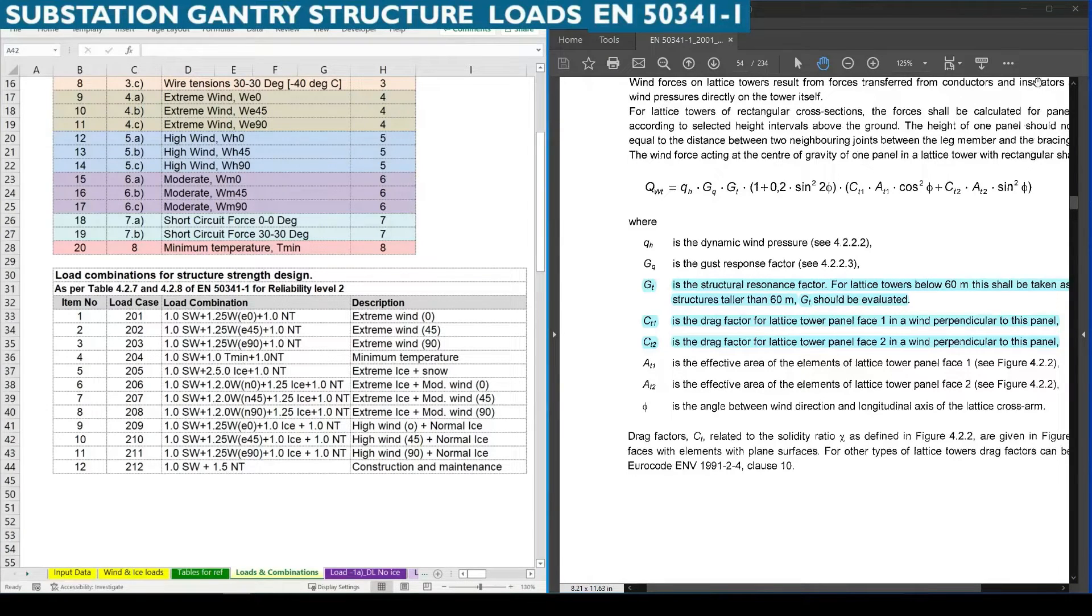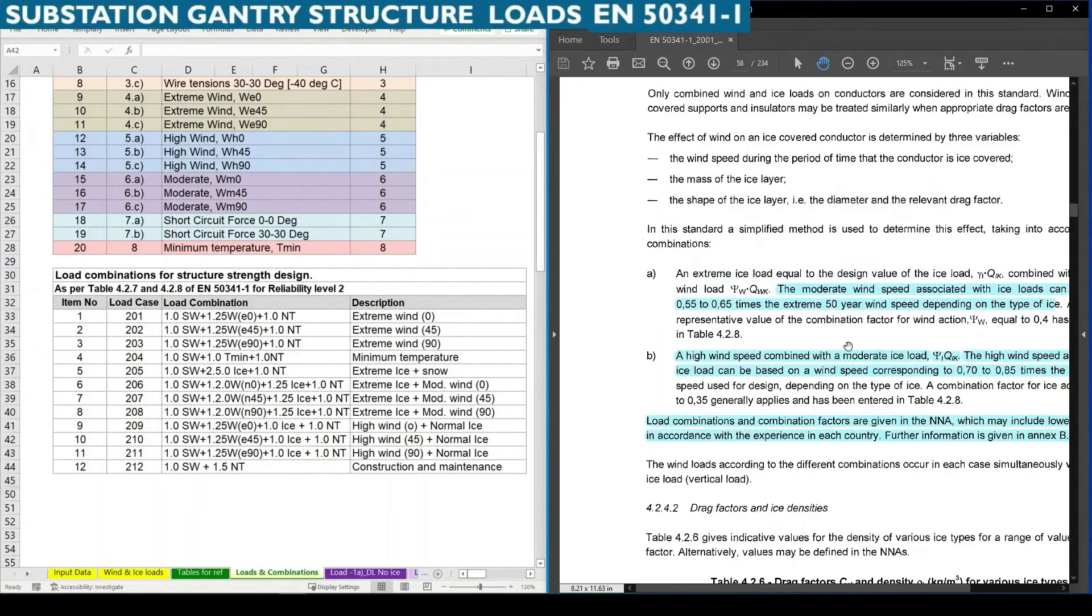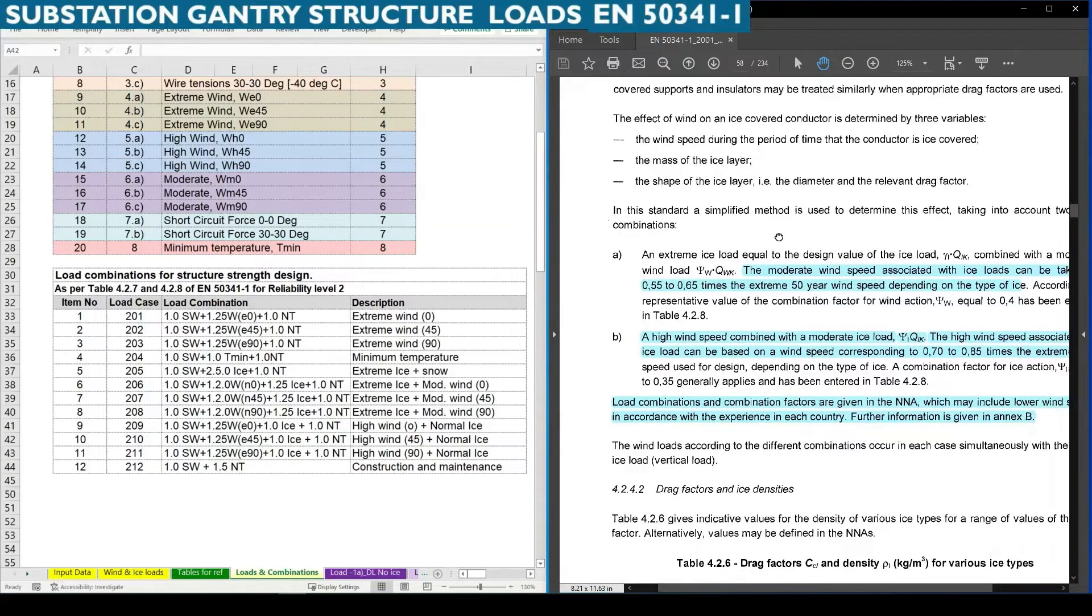The load combinations are mainly categories based upon the European standard and large parts and its national annexes. For that page number 58 and 66 to be referred. For 58 if you see, so there are various combinations details like wind and ice are given here.